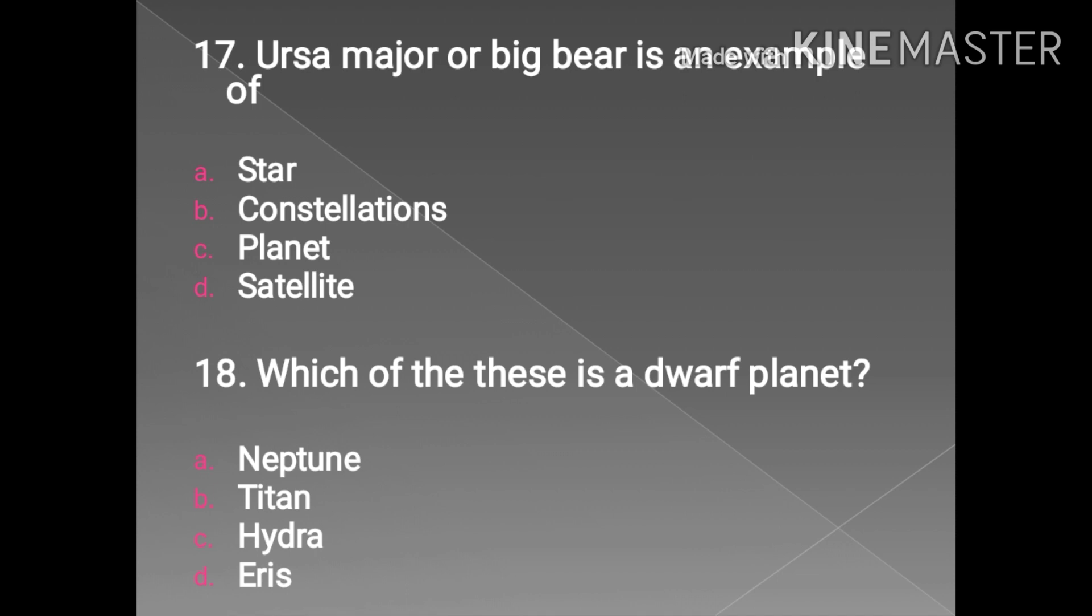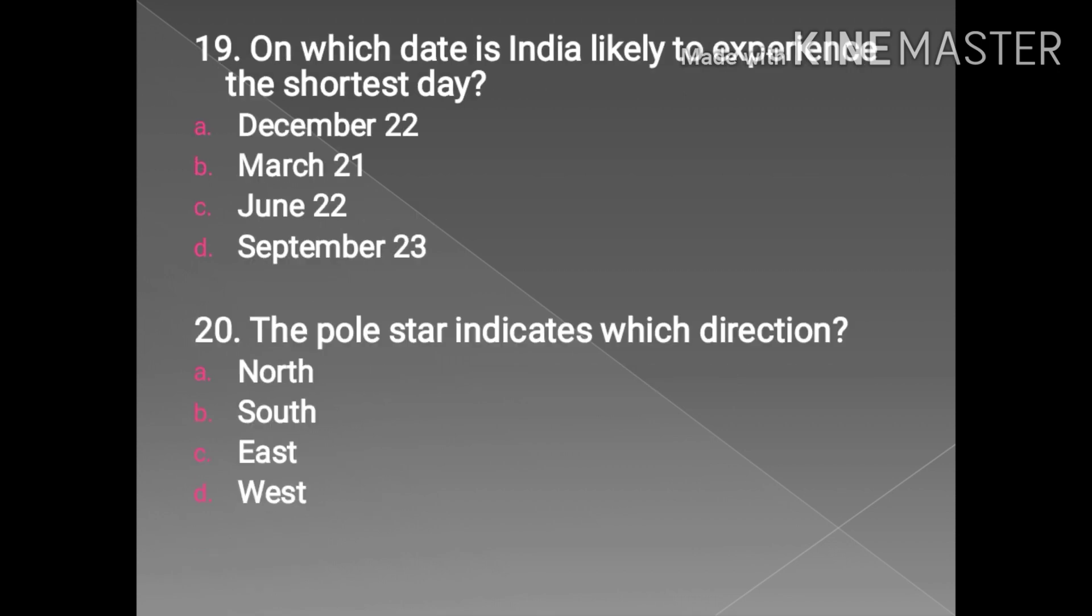Which of these is a dwarf planet? Neptune is a planet, Titan is not a planet and not even a dwarf planet. The correct answer here is Eris. Talking about Eris, Eris is the most massive and second largest dwarf planet. It is 27 percent more massive than Pluto.